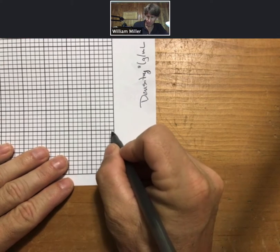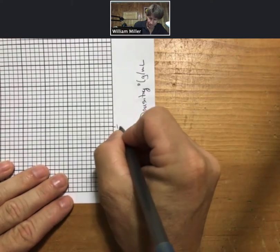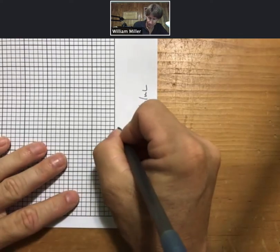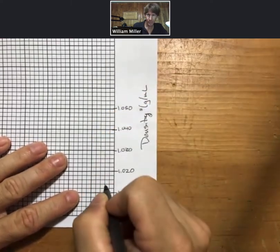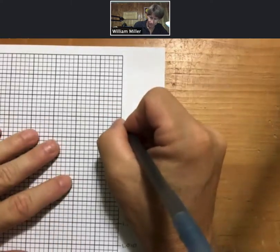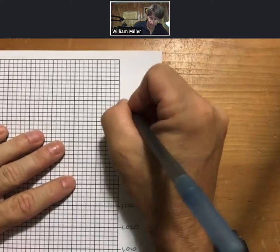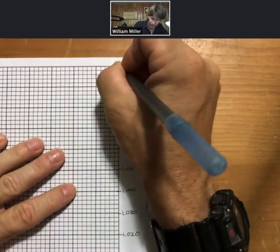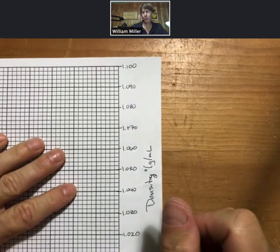1, 2, 3, 4, 5 1.020, 1.030 all the way across the page, 1.060, 1.07, all the way across to 1.100